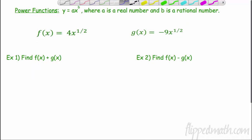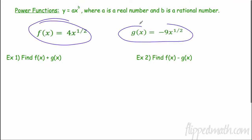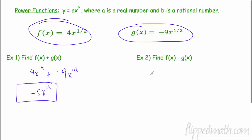So a power function — what is a power function? It's any function in the form of y equals ax to the b, where a is a real number and b is a rational number. So rational — you know, 2, 3, 4, one half. So here we have two power functions, f of x and g of x, and we're going to do the same operations. Adding 4x to the one half plus g of x, negative 9x to the one half. To combine like terms you need the same variable — check — to the same power — check. So 4 plus negative 9 is negative 5x to the one half. Over here, same thing: subtract 4x to the one half minus negative 9x to the one half — minus a negative is plus — so that's 13x to the one half.